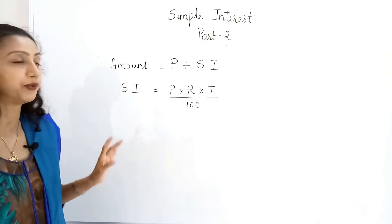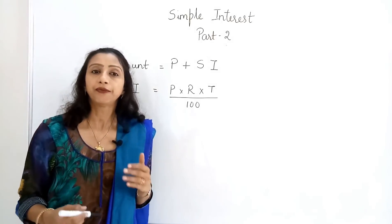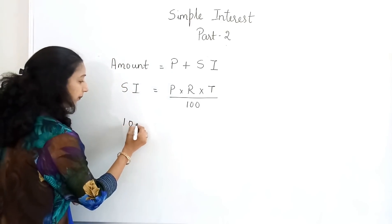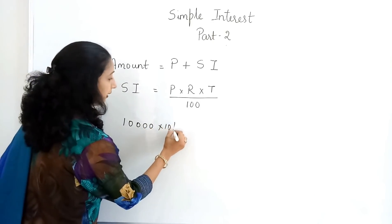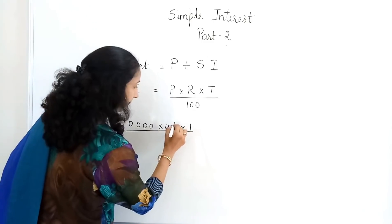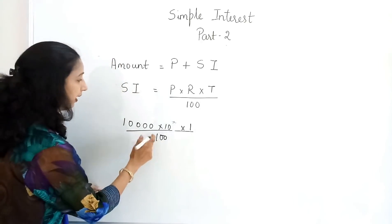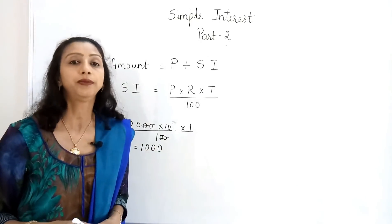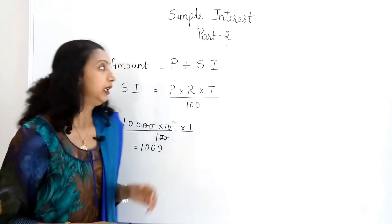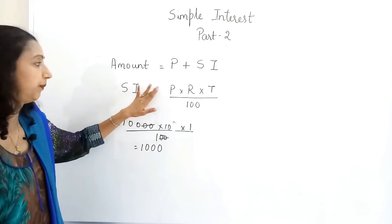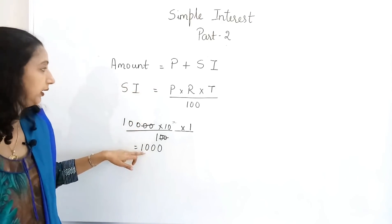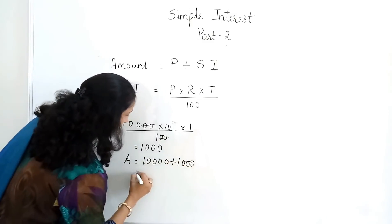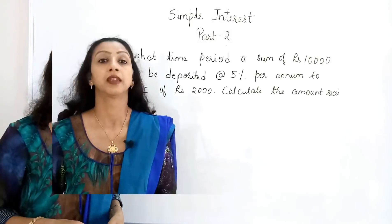SI = PRT/100. But what exactly is 'amount'? If you deposit ₹10,000 in a bank at the rate of 10% for one year, 10% divided by 100 gives you ₹1,000 as simple interest. But when you take out your money you don't only get the simple interest — you get the principal plus the simple interest, that means 10,000 + 1,000 = ₹11,000. That is the amount you receive at the end of the first year.